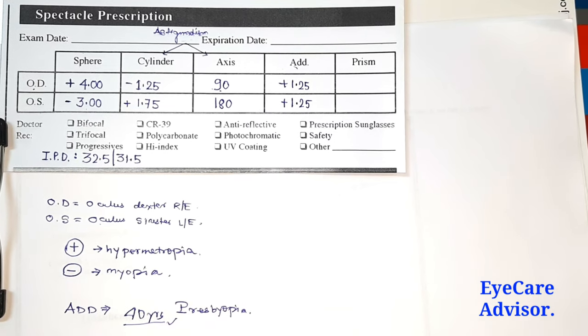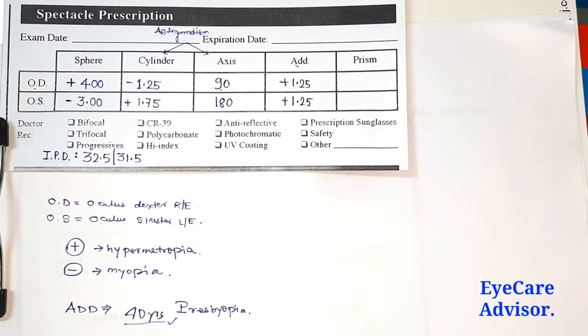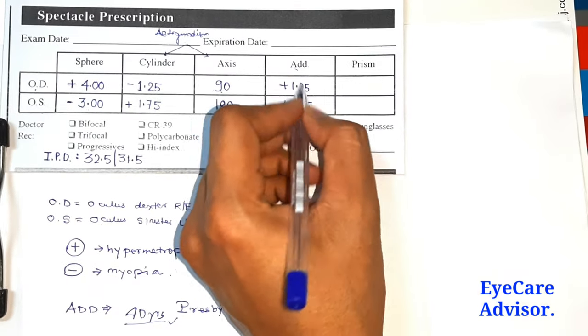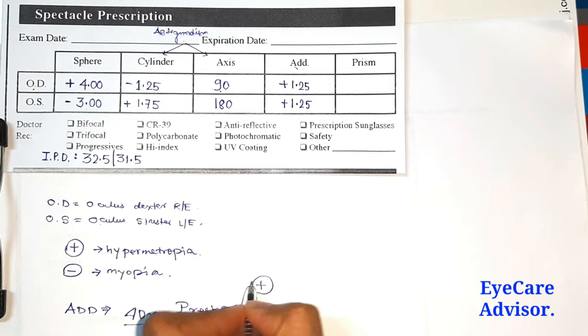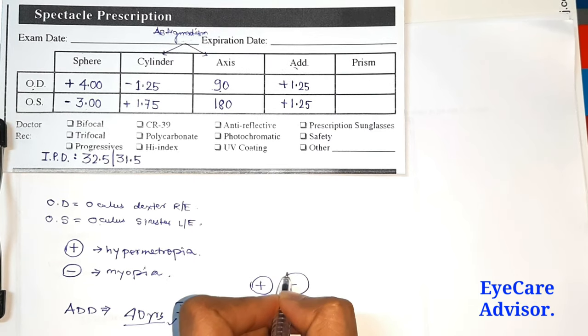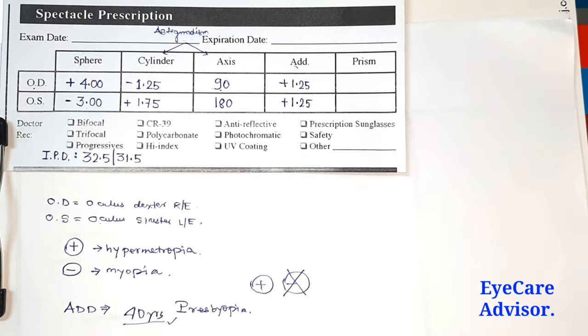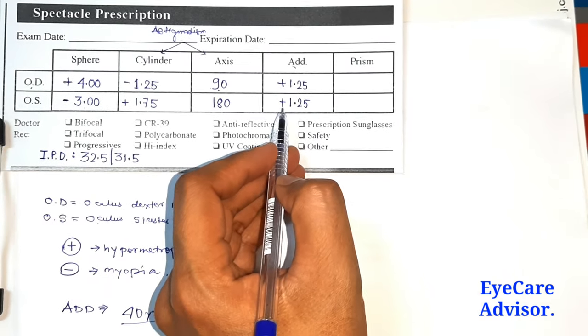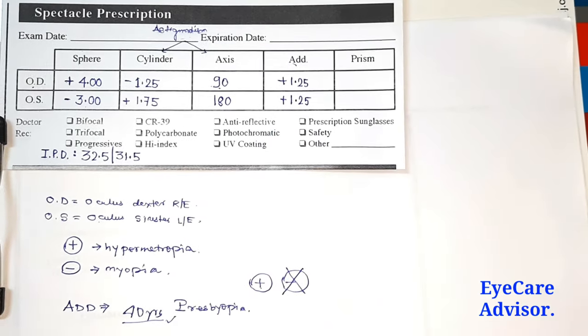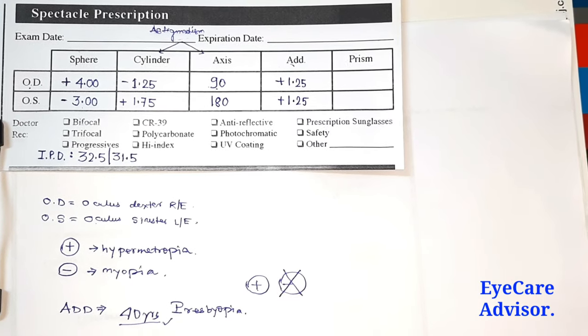For them, some reading prescription is required, and this add will always be in plus. It always comes in plus, it cannot be in minus. The reading prescription will always be in plus. For this case, as we can see, this is 1.25 for both eyes.